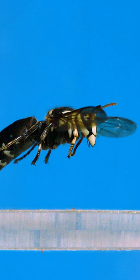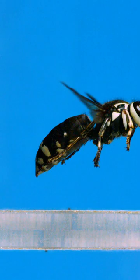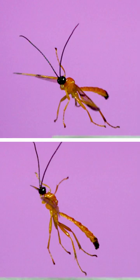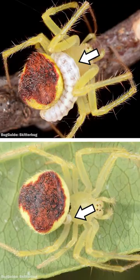But most wasps — like over 90% of them — aren't like this one. Most are like this one: a solitary parasite of other arthropods. This ichneumonid wasp parasitizes orb weaver spiders. Here are the larvae attached to a spider and feeding.